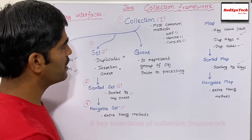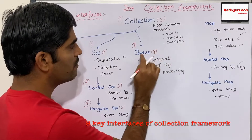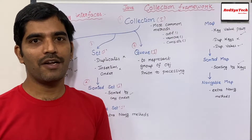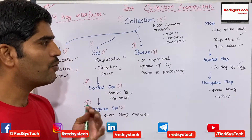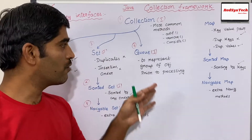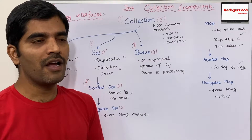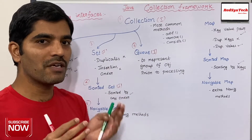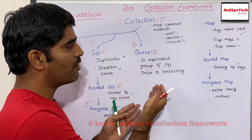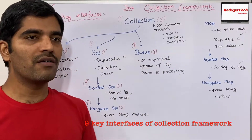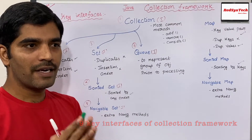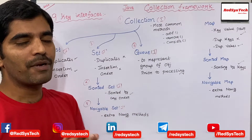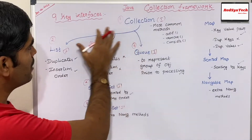The sixth interface is Queue, which is mainly used to represent a group of objects before processing. For example, if you want to send emails to 1000 customers, the processing is sending the email, but before that you may want to save those email IDs to a database — that operation uses a queue. Basically, you go for Queue when you have a requirement where you need to do something with the data prior to processing it.